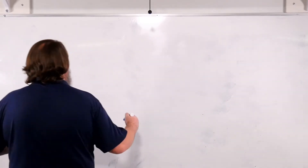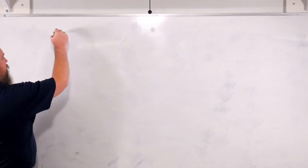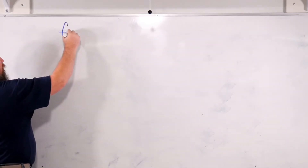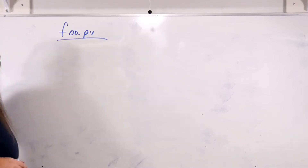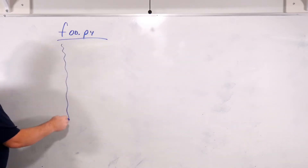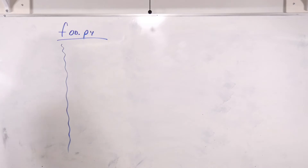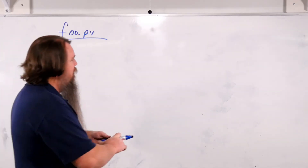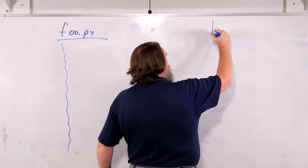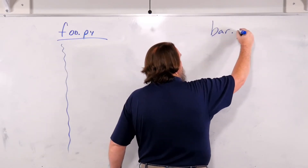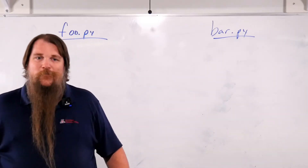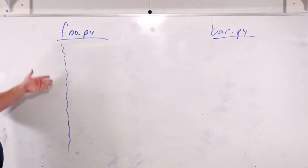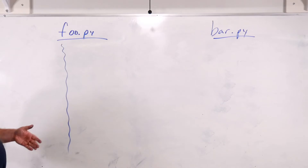Let's imagine that we have two files here. We have foo.py over here, and inside foo.py we've got lots and lots of interesting code — all sorts of things that we want to share with other people. Over here we've got bar.py. Now in bar.py, we want to have access to what foo is providing. So how do we do this?